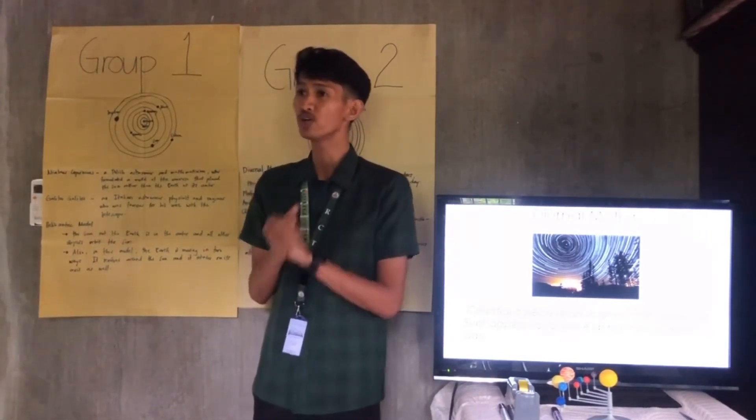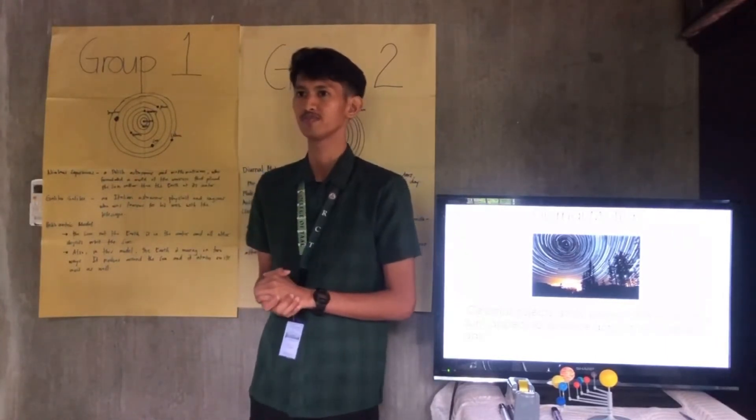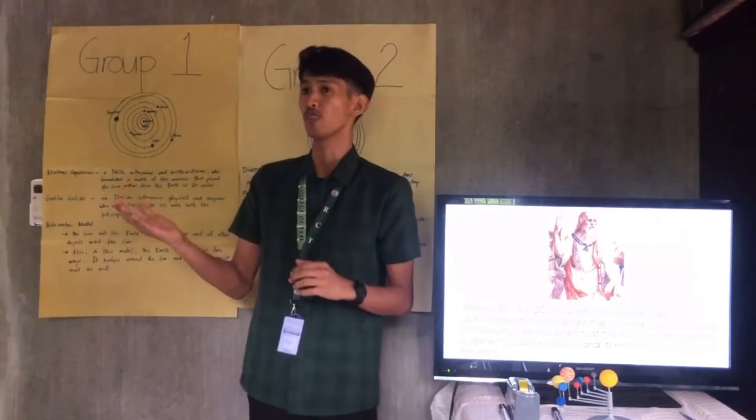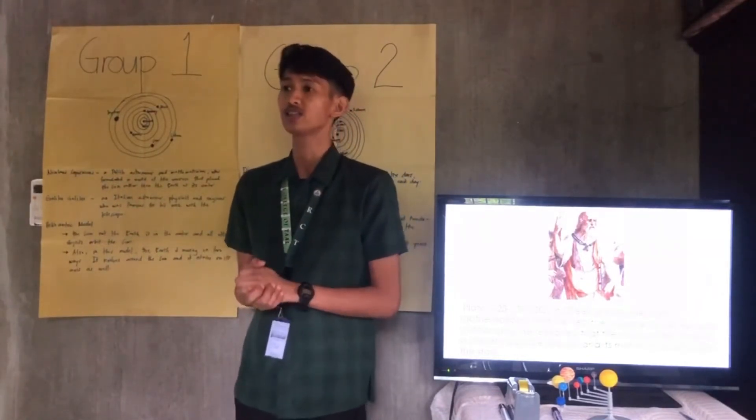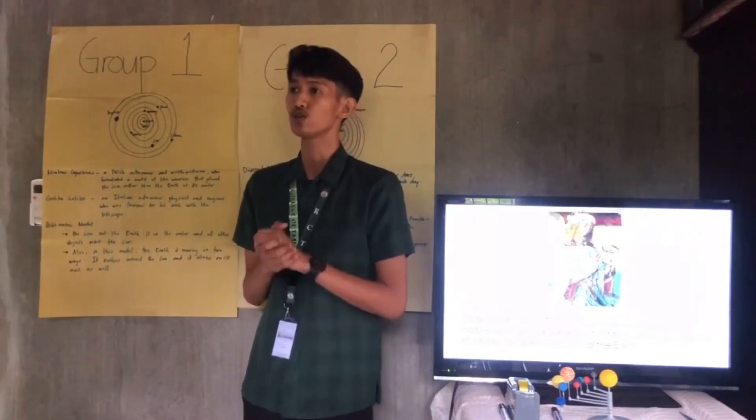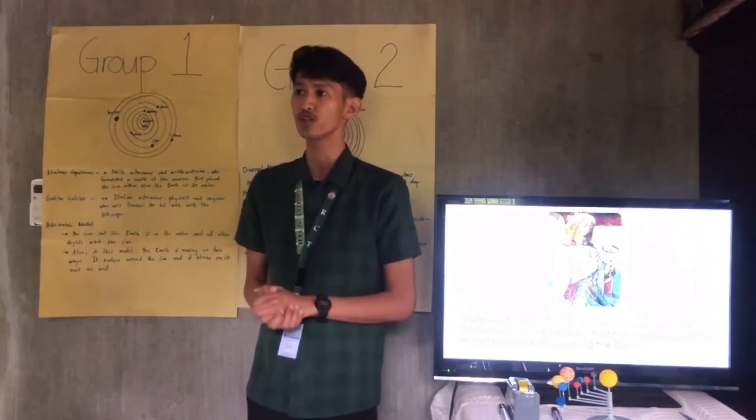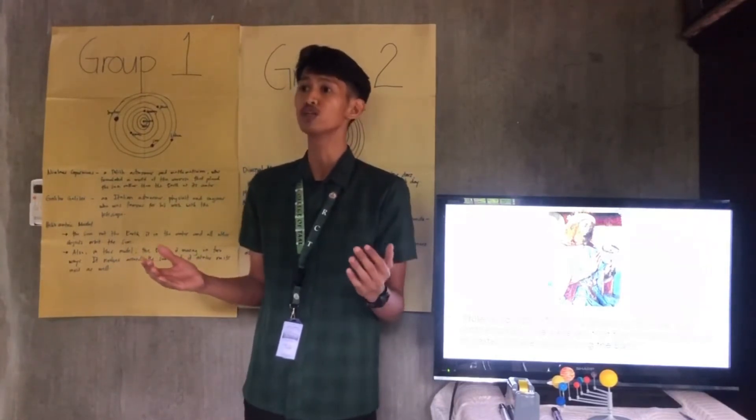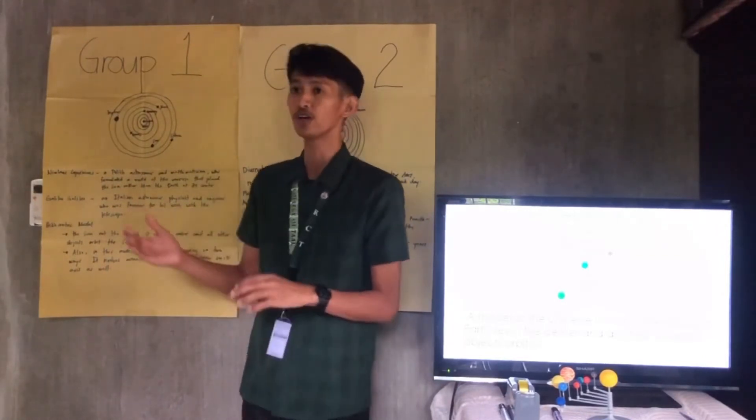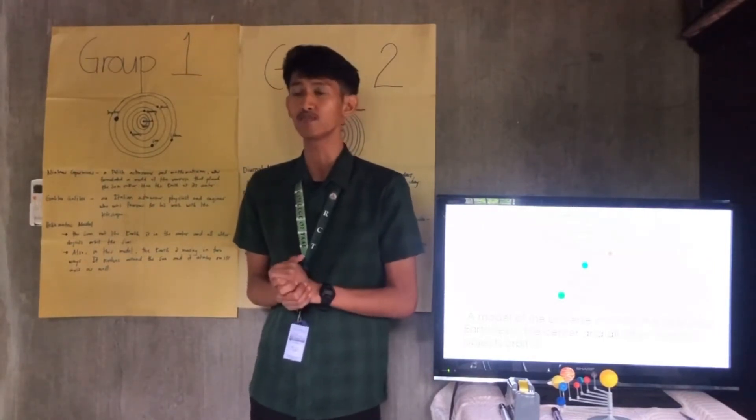And who were the three Greek proponents of the geocentric model of the universe? Excellent! Very well said. So first is Plato, a philosopher and mathematician. Next is Aristotle, a famous philosopher. And the third one is Claudius Ptolemy, an astronomer and mathematician. The three of them were able to formulate a fairly good functioning model of the universe, which came to be known as the geocentric model. This model, however, was largely accepted for more than 1,000 years after it was formulated by Ptolemy.